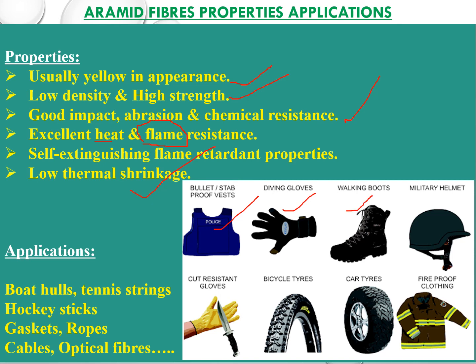Applications include bulletproof vests, driving gloves, walking boots, military helmets, cutting-resistance gloves, bicycle tires, car tires, puncture-resistant tubes, fireproofing clothes, boathouse materials, tennis strings, orchestra equipment, cricket ropes, cables, and optical fibers. These are also called bulletproof plastics — aramid fiber reinforced plastics.